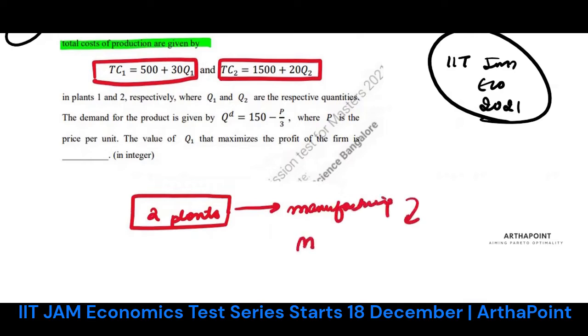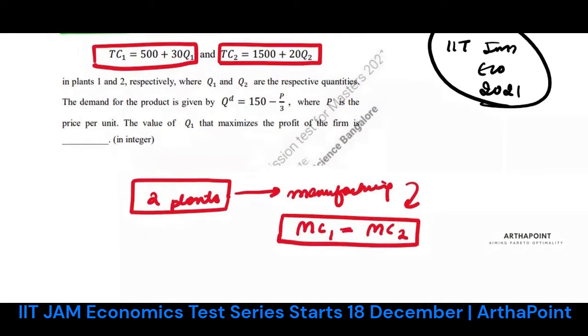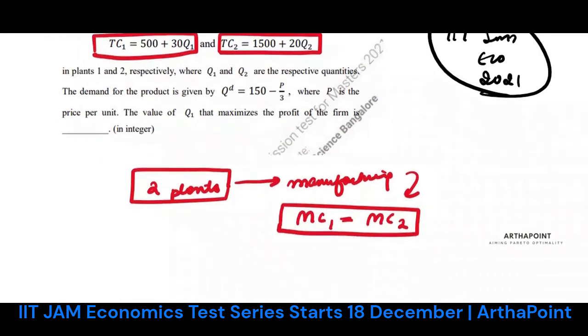Only when marginal cost from plant 1 is equal to marginal cost from plant 2, only then would I be using both plants. If the marginal costs are different, the cost of producing an additional unit is different.